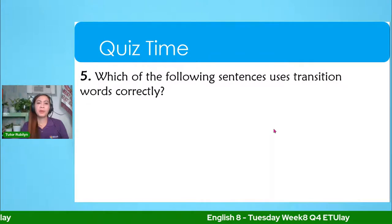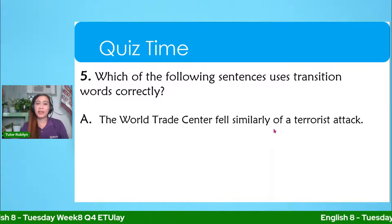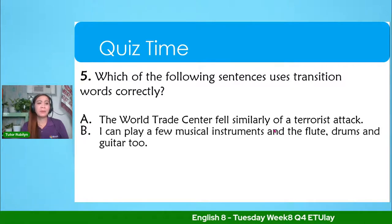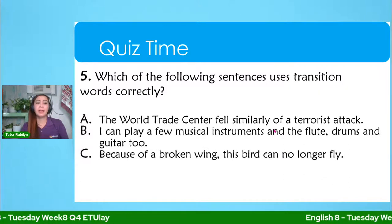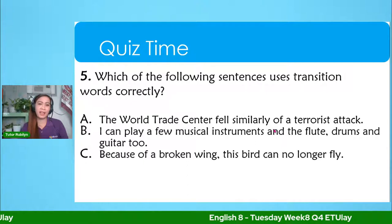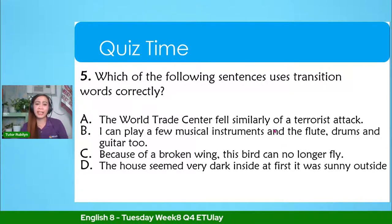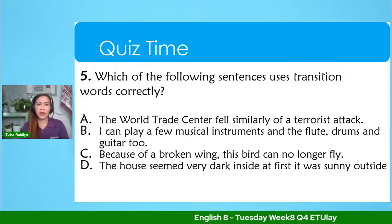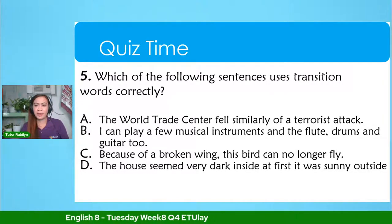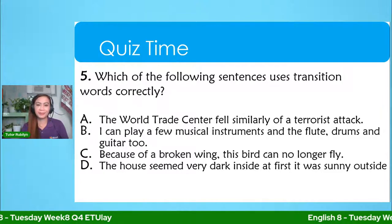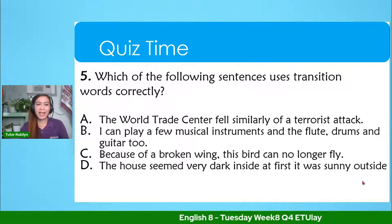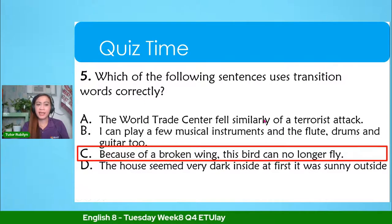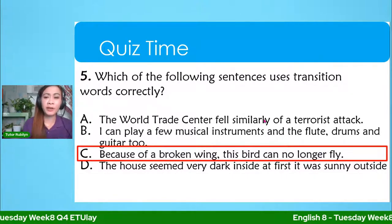For number five: which of the following sentences uses transition words correctly? A: The World Trade Center fell similarly of a terrorist attack. B: I can play a few musical instruments — a flute, drums, and guitar too. C: Because of a broken wing, this bird can no longer fly. D: The house seemed very dark inside at first. It was sunny outside. The answer for number five is letter C: because of a broken wing, this bird can no longer fly.